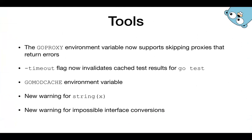Let's go to the tool changes. As I said previously, the go proxy environment variable now supports skipping proxies that return errors. Previously, when we used the go proxy environment variable, we put our sources comma-separated. Now, if we replace the comma with a pipe character, in case of failure of the first source, we will move to the second one. With a comma, when we receive an error for the first source, the proxy process fails. But with the pipe character between sources, we move to the next source in our environment variable values.